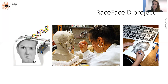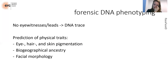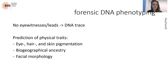Today I'm not going to talk so much about race, but to look at the different kinds of practices related to forensic DNA phenotyping. Forensic DNA phenotyping is a technology used in cases where there are no eyewitnesses or other leads but DNA traces are available. Different physical traits can be predicted: first, eye, hair and skin color; second, biogeographical ancestry; and finally facial morphology, although this is still in early stages because facial morphology is genetically very complex.